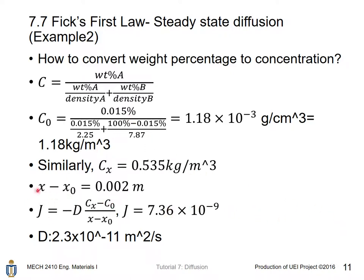The distance between these two concentrations equals 0.002 m. Using this equation here, J is given, C₀ is given, x₀ is given, x is also given. We get D, which is diffusion coefficient or diffusivity, equal to 2.3×10⁻¹¹ m²/s.